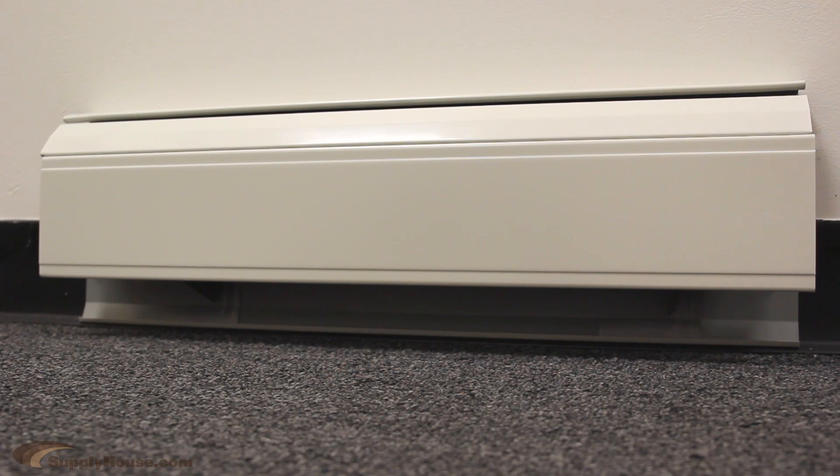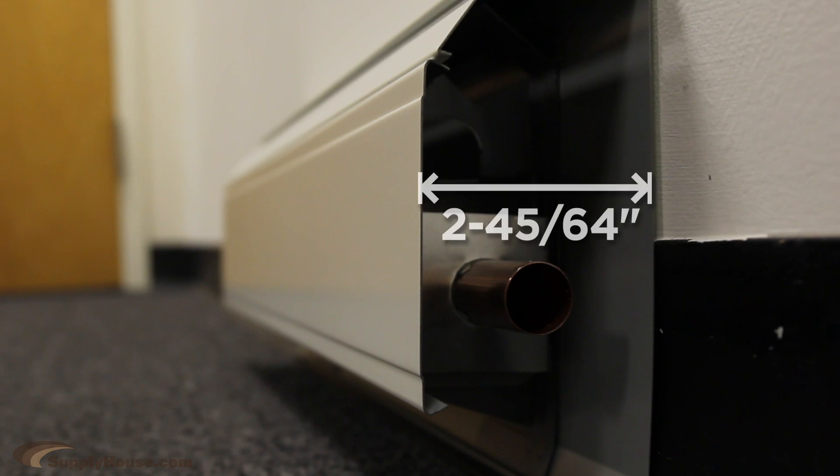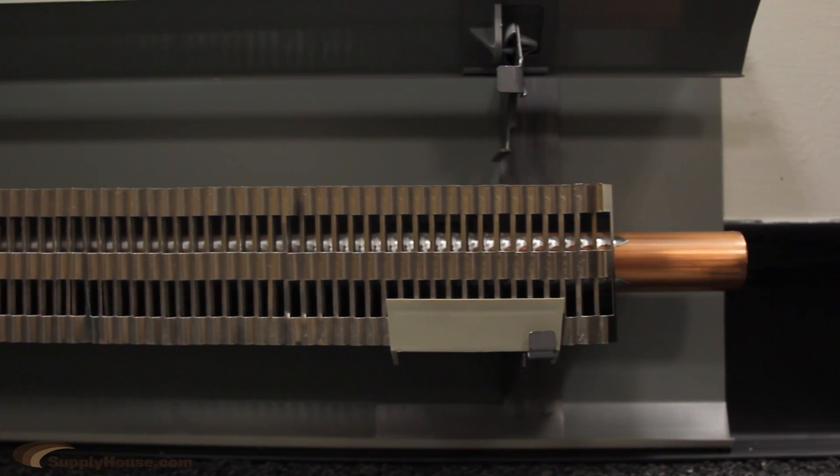The Baseline 2000 has an overall height of 7 and 23/64th inches, and an overall depth of 2 and 45/64th inches, with up to 600 BTUs per foot output.